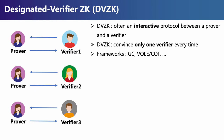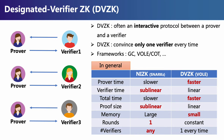Designated Verifier Zero-Knowledge, that is DVZK, is often an interactive protocol between a prover and verifier, and handles only one verifier at a time. DVZK can be constructed under different frameworks. In general, NIZK has sublinear verifier time, sublinear proof size, and is non-interactive. Compared to NIZK, DVZK has faster proof time, faster total time, and small memory, but requires linear verifier time, linear proof size, and constant rounds of communication. Therefore, NIZK and DVZK have different efficiency features.